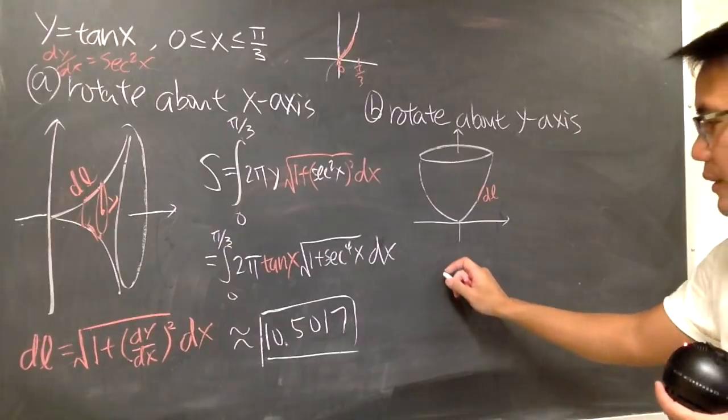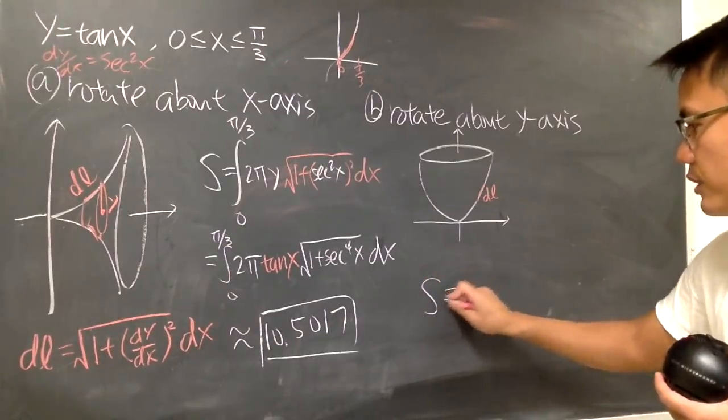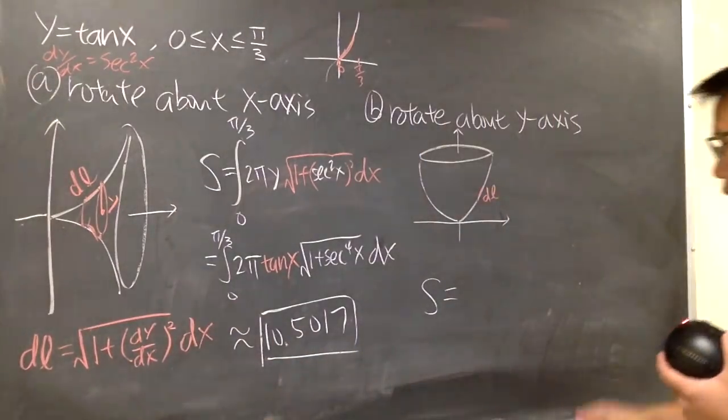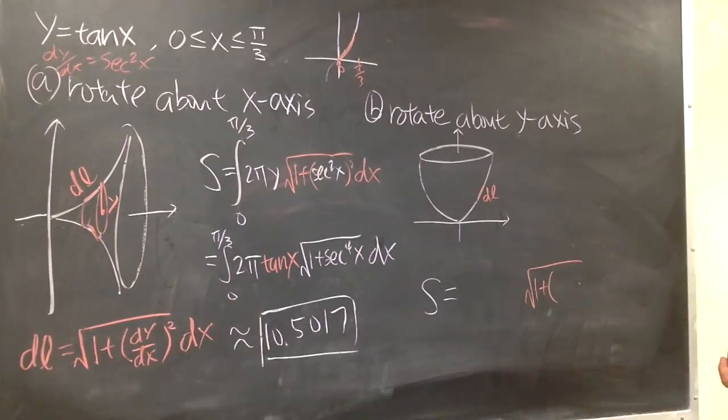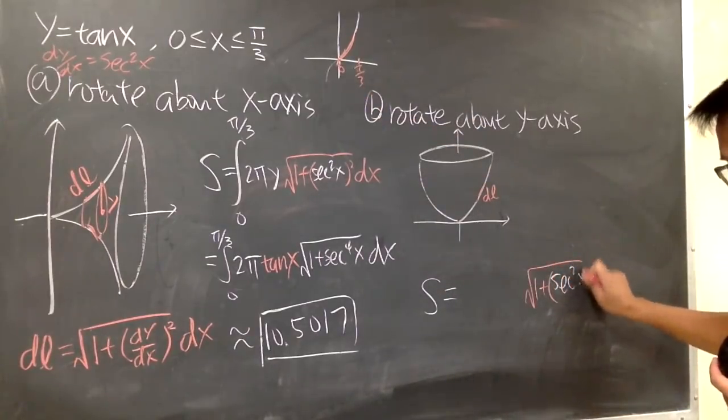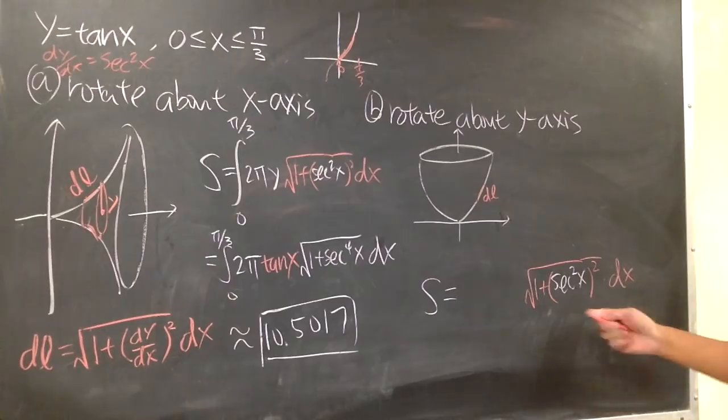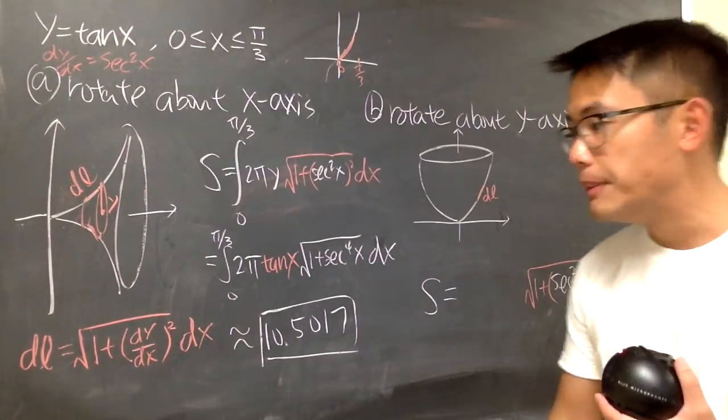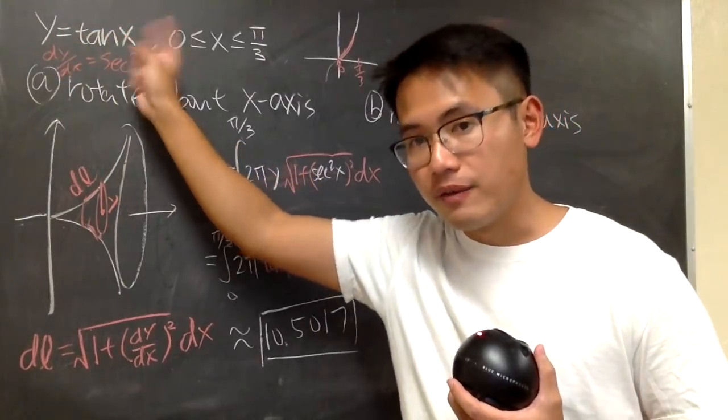So the integral is the following. I will just write this down for you guys in this situation. I will still be using this, so I will put this down right here. Square root of 1 plus parentheses, with still the secant square x inside. And I will have to square this guy. And we are still doing this with respect to x because of the dl, because of y as a function of x.